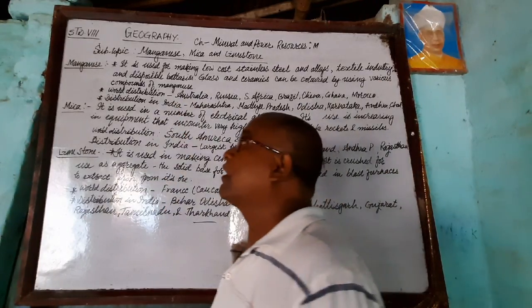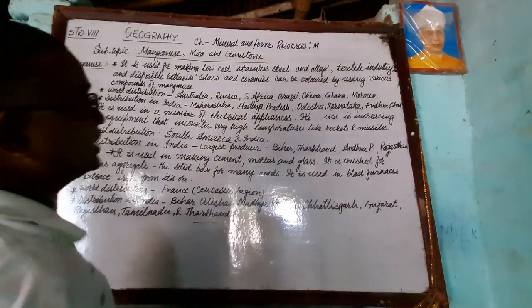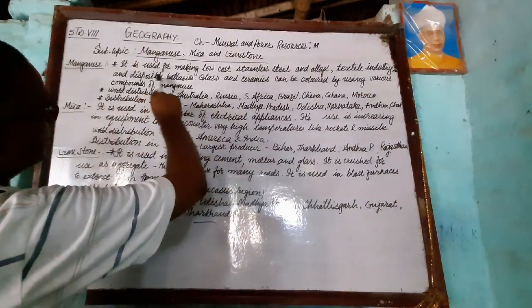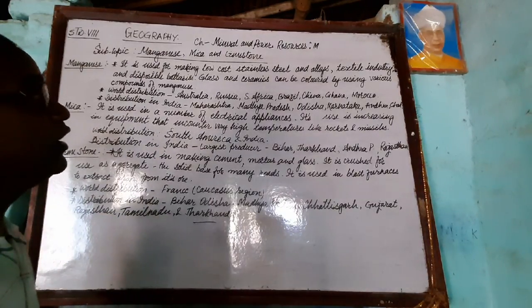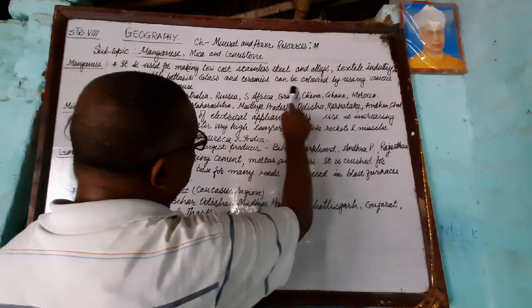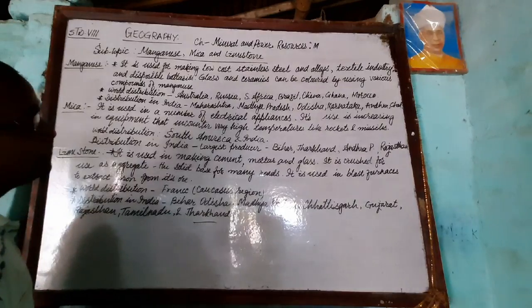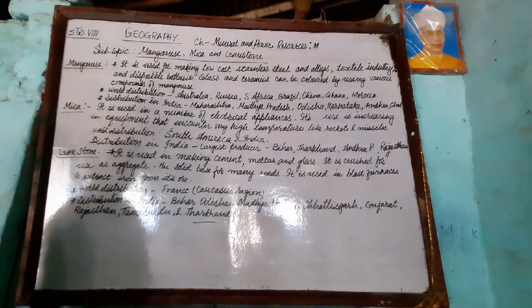Manganese is used for making low-cost stainless steel and alloys, and in textile industries. Disposable batteries can also be made using various compounds of manganese. It is also used to make glass and ceramics colorful. These are the main uses of manganese.